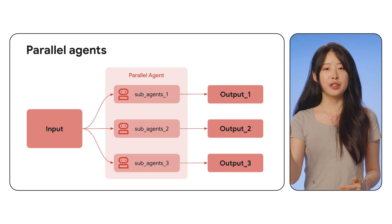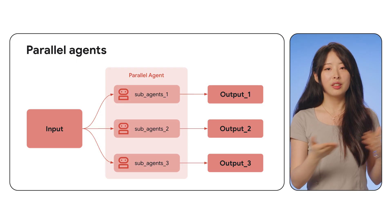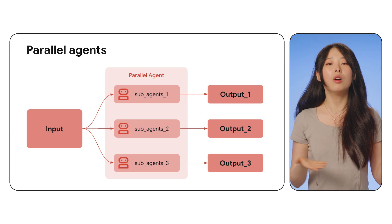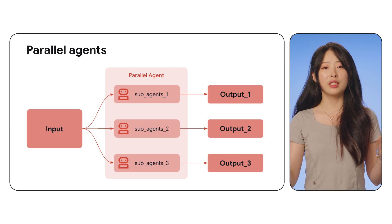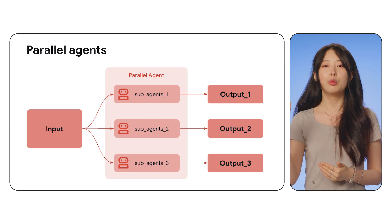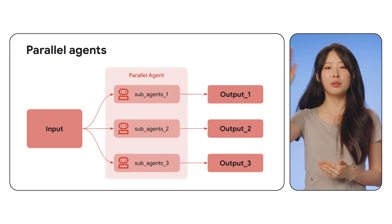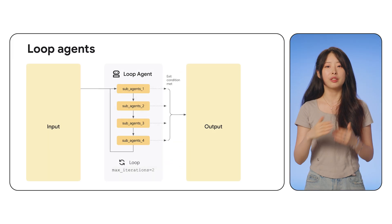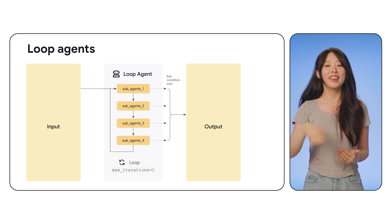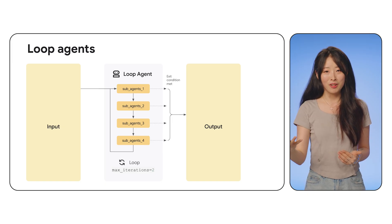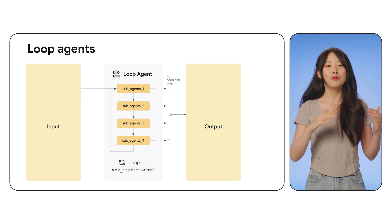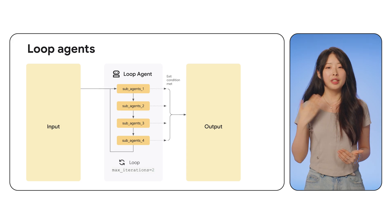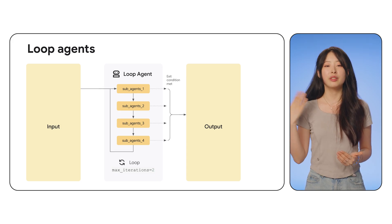The second type of workflow agent is the parallel agent. They're like a manager assigning tasks to three employees all at once. It is really great for use cases with independent tasks — for example, fetching data from multiple APIs simultaneously. The third type of workflow agent is the loop agent. They're like debugging again and again until it works. A loop agent runs tasks repeatedly until a condition is met, or until reaching the maximum iteration number.